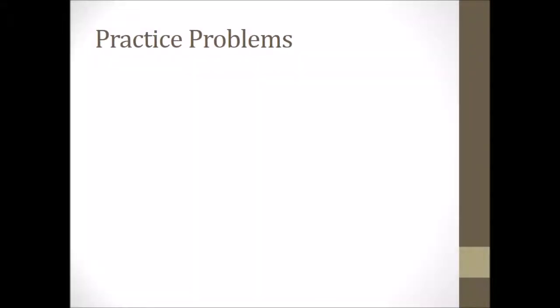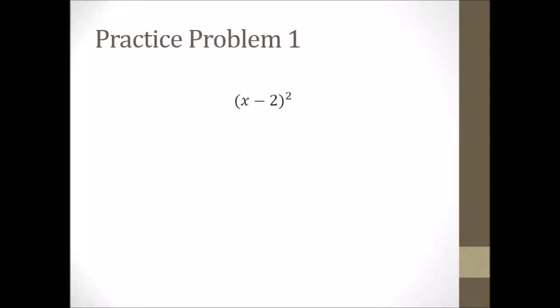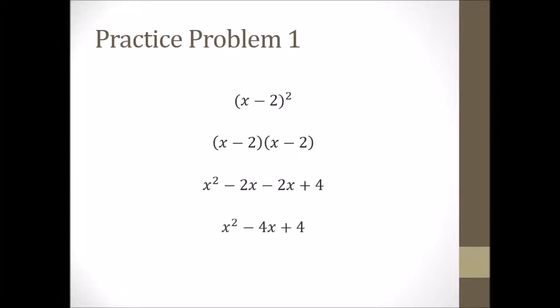Now let's do some practice problems — we're going to expand X minus 2 squared, X minus 2 cubed, and X minus 2 to the fourth power. For the first one, it's straightforward FOILing: X minus 2 times X minus 2. Remember — first, outside, inside, last. That gives us our first, outside, inside, and last terms. Combine like terms and there's your answer.